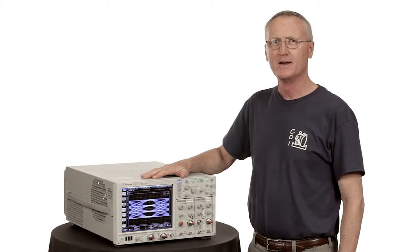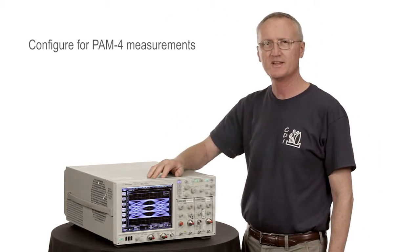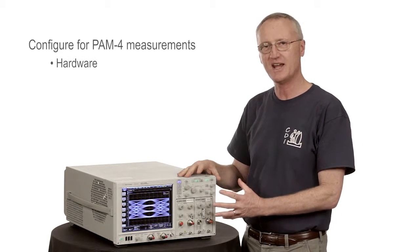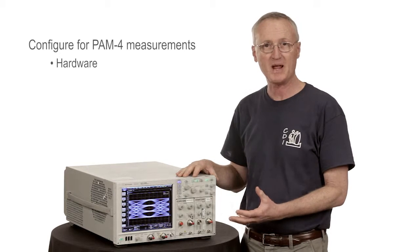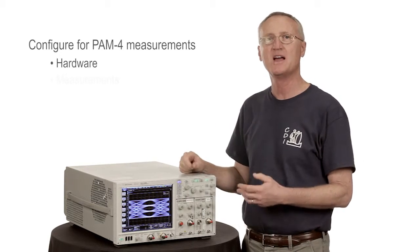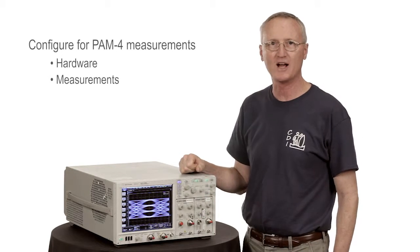When we think about configuring a DCA to do PAM-4 work, there's really two things that we're concerned about. How do you configure the hardware in the DCA to be able to accept a PAM-4 signal? And the second thing that we worry about is how is it that we actually make the measurements on the PAM-4 eye diagram.